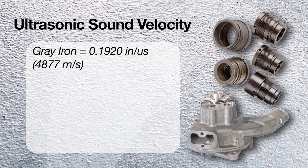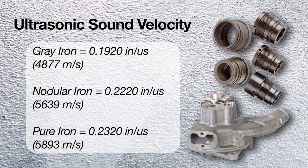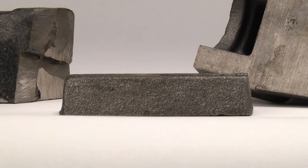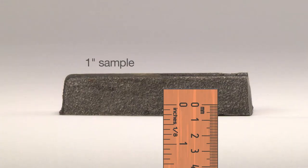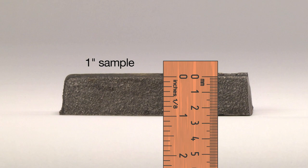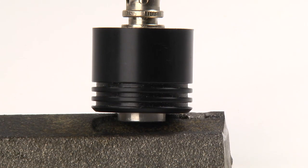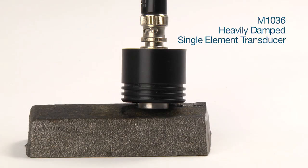We can check nodularity by measuring the ultrasonic sound velocity through the material. Each material will have a different sound velocity. In order to measure it correctly, it is important to know the true thickness of the sample you are working with. To perform the test, we will use a heavily damped single element transducer for penetration and accuracy.